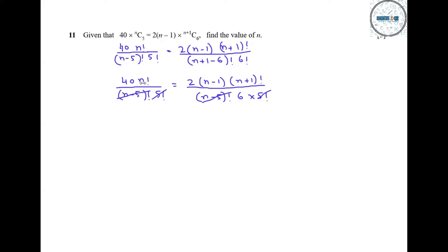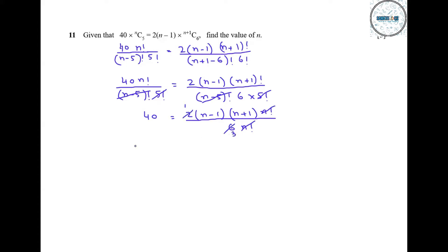Now we take n factorial to the denominator on the other side where it will be dividing, and we can write (n+1) factorial as (n+1) into n factorial. So n factorial and n factorial cancel out. We simplify: 2×1 is 2, 2×3 is 6, and this 3 multiplied gives 120.